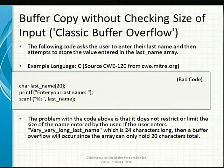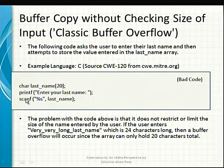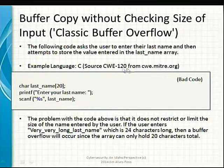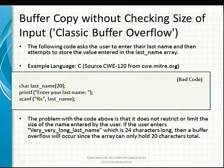A more precise example: you have a character array last_name[20], ask the user to enter their last name, then scan the string into last_name. If the user enters a last name longer than 20 characters, it overflows that buffer. This is CWE Common Weakness Enumeration 120 at MITRE. If you enter a very long last name — say, 24 characters — you get a buffer overflow. And bad guys can lie; they can tell you a different last name than their real one.